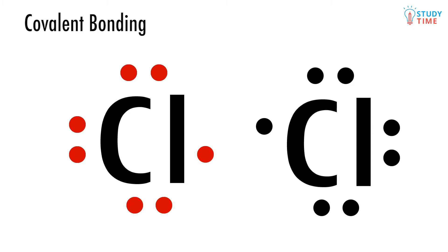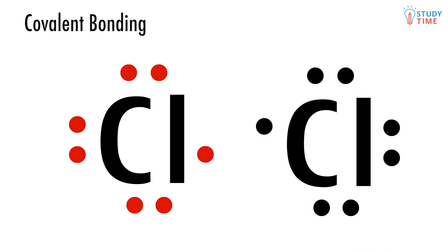This second chlorine atom is identical to the first in every way. We've drawn the second atom's electrons as red dots to differentiate them from the first atom's electrons. Remember, all of these electrons are valence electrons. When a Cl2 molecule gets formed, this chlorine atom and the first one will share their valence electrons. They both want to end up with eight valence electrons, to give them that precious full outer shell, and it just so happens that they can get it just like this.